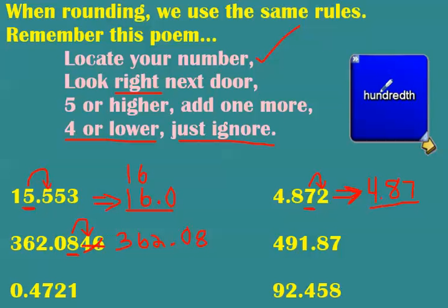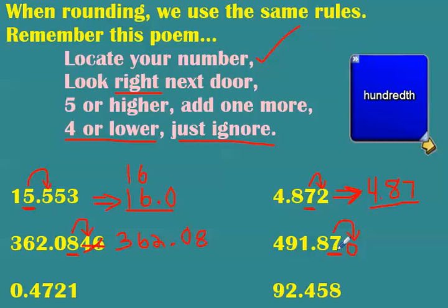Let's do one last one. We're rounding 491.87 to the hundredths. The seven is in the hundredths place. Now here's the tricky part: there's nothing next door. What number means nothing? Zero. We actually don't need to round this one to the hundredths because it's already there — the number is already expressed to the hundredths place.